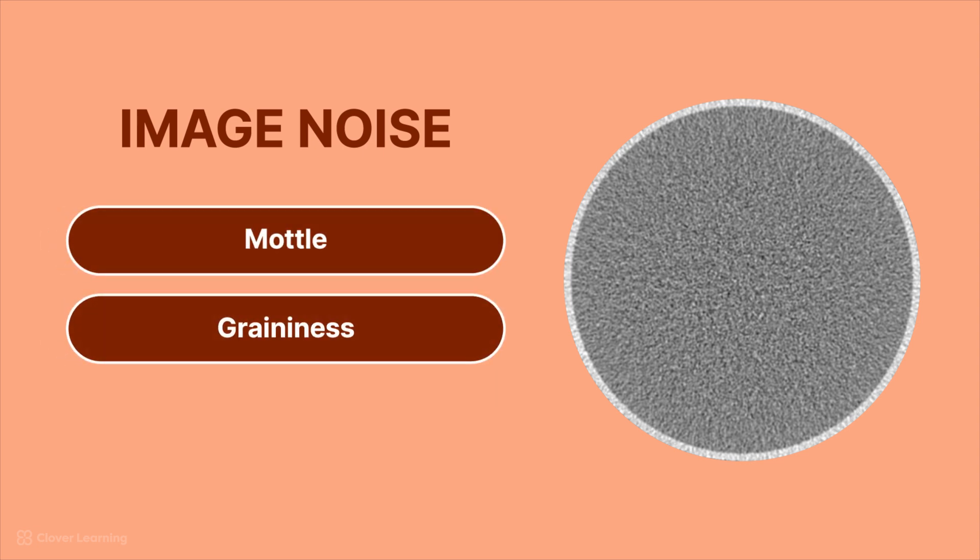Another quality control test that has to be performed on a regular basis is image noise. Image noise in CT is similar to image noise in radiography. It's basically the same thing as mottle or graininess in the image, and it's usually the result of significant attenuation of the x-ray beam.